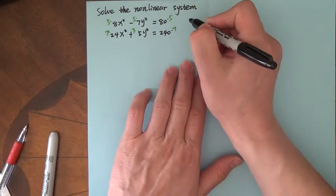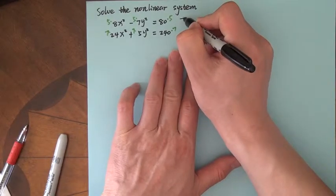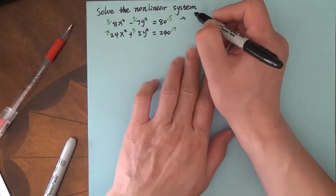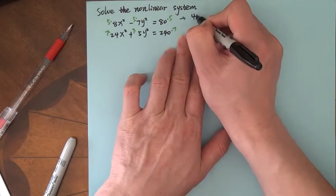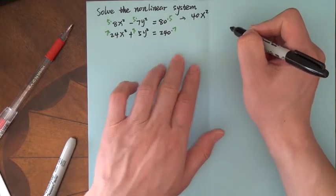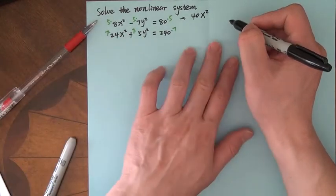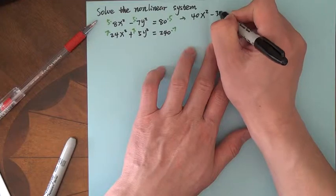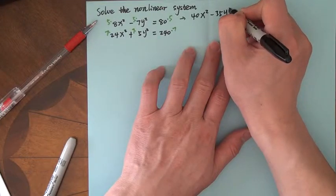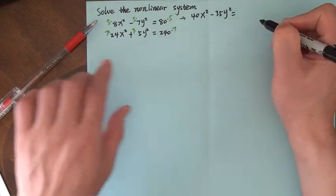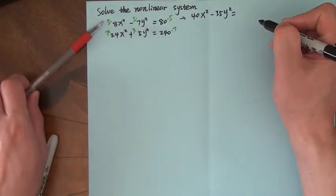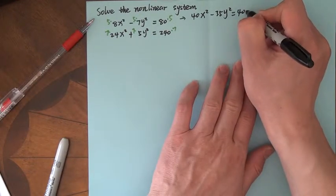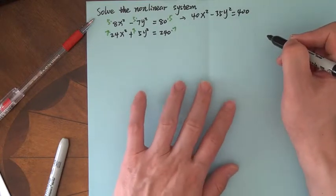Now, keep going. Here we will have 5 times 8, that's 40x squared, minus 35y squared. And then 5 times 80, we know that's 40 and we have one more zero here, so 400.